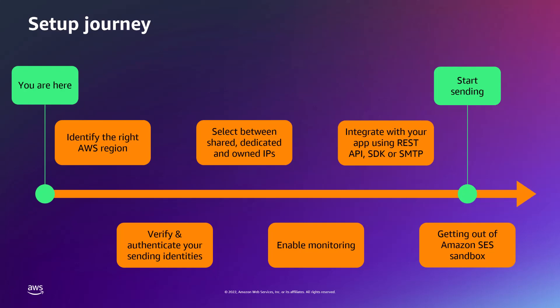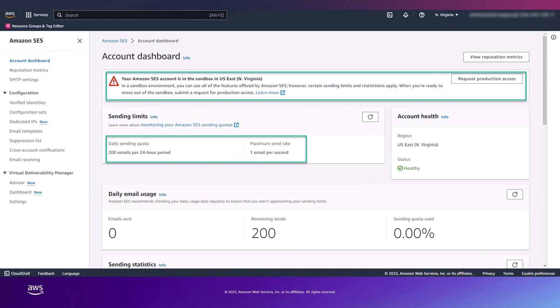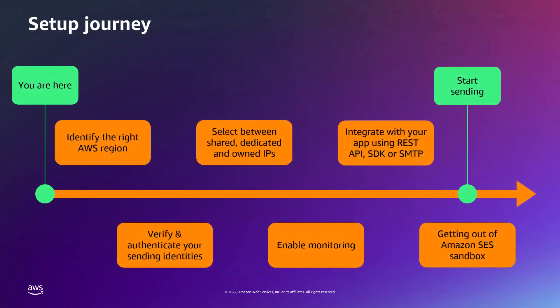Once all the above steps are completed, you will need to move out of Amazon SES Sandbox. By default, your SES account is placed in the Amazon SES Sandbox to help prevent fraud and abuse and to protect your reputation as a sender. The restrictions applied include sending emails to only verified email addresses or domains, sending up to 200 emails per 24 hours, and a maximum of 1 email per second. You can request to move your account out of the SES Sandbox via the AWS Management Console or programmatically via the AWS Command Line Interface. To prevent our systems from being used to send unsolicited or malicious content, we consider each request carefully. If we are able to do so, we'll grant your request within a 24-hour period; however, if we need additional information from you, it might take longer to resolve.